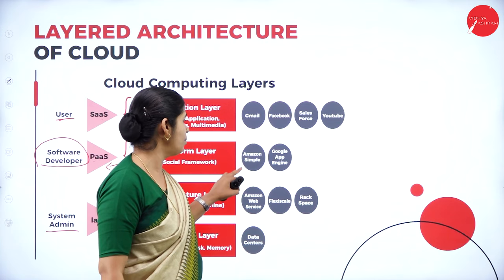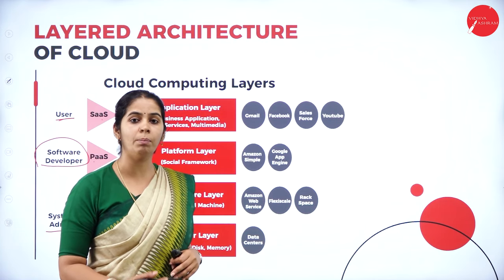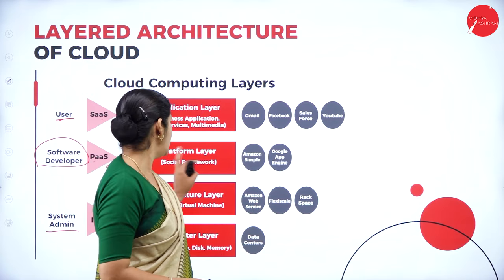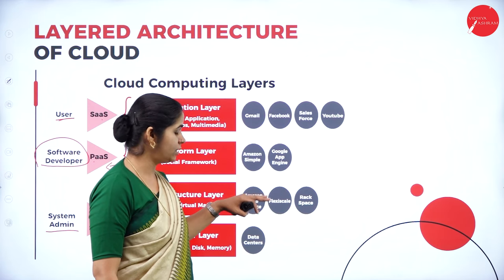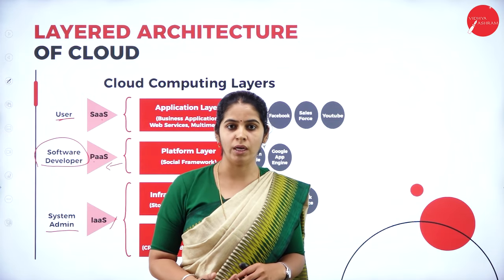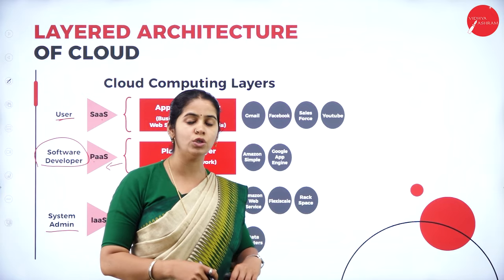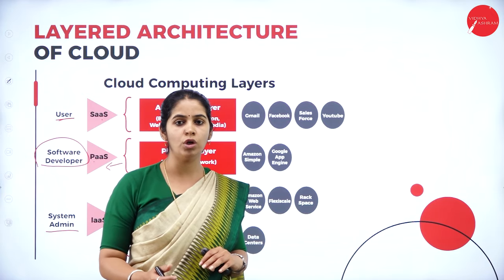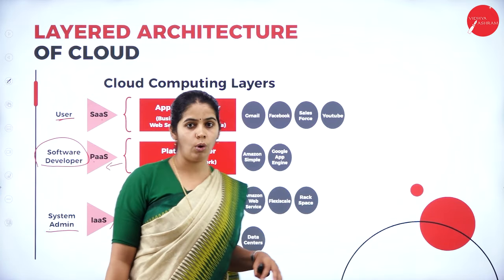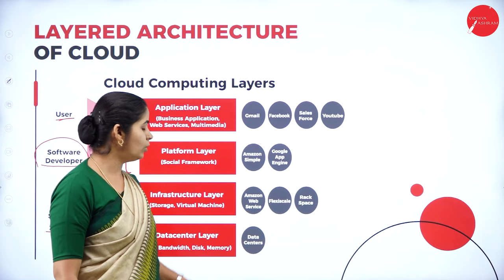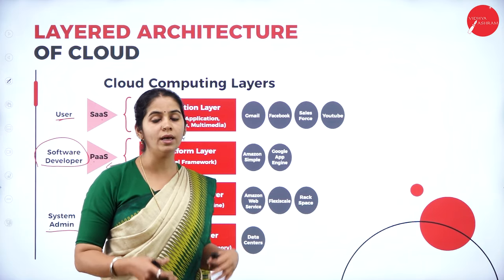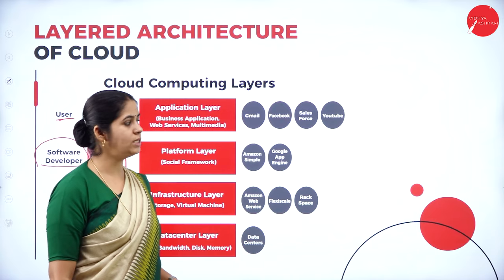Amazon Web Services, Flexiscale, and Rackspace are examples of infrastructure providers — using their own hardware, they create virtual machines and provide infrastructure for system admins. The data center layer has no specific service provider; it is where all physical resources are installed in one place.